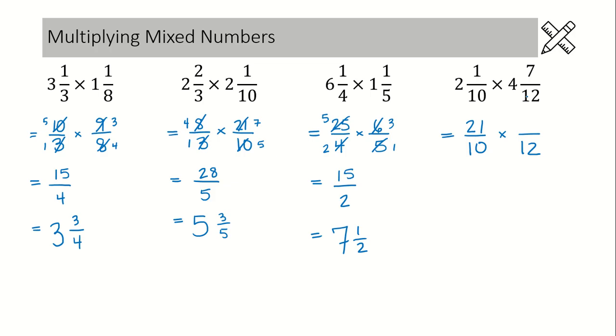This one's a little bit harder, so slow down. We have 12 times 4. That would be 48, add 7, and then we get 55.